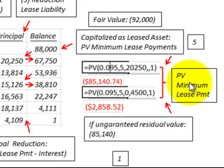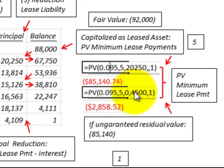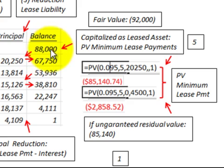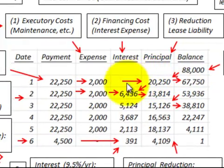Adding the present value of the lease payments ($85,140) and the present value of the guaranteed residual value ($2,858) together gives us the capitalized leased asset of $88,000. Note that the fair value of the leased asset is $92,000, but for the effective interest method, we use the capitalized amount of the minimum lease payments.